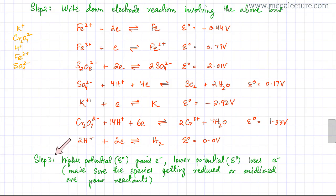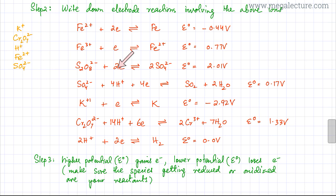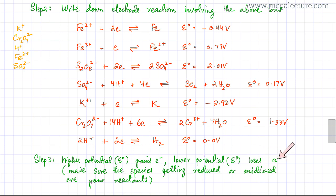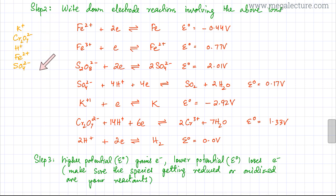Moving to step 3: I've written down all the electrode reactions for my reactants — K+1, Cr2O7 2-, H+1, Fe2+, and SO4 2-. Now I need to figure out which electrode has the highest potential, because the higher the E0, the greater the tendency to gain electrons. The lower potential is the one that would be losing electrons or getting oxidized. I also need to ensure the species getting oxidized or reduced are actually present in my reactants.